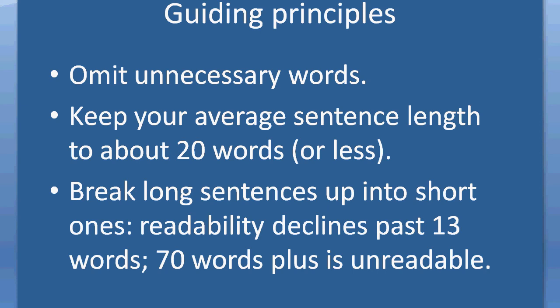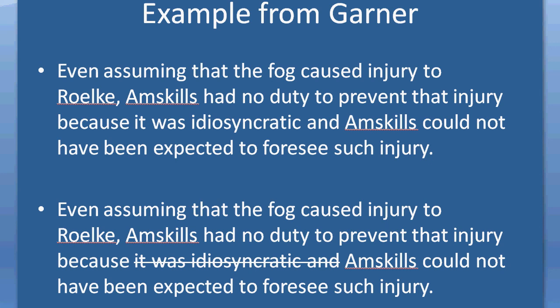Let's start applying these. We'll do a couple of examples in this screencast and then pick up a few more in screencast 3. In one of Garner's exercises he asks: can you take three or more words together out of a lengthy sentence without destroying its meaning? Here's a typical example: 'Even assuming that the fog caused injury to Rolk, AMP schools had no duty to prevent that injury because it was idiosyncratic and AMP schools could not have been expected to foresee such injury.' There's no difference in meaning if we cut out the four words 'it was idiosyncratic and,' leaving: 'Even assuming that the fog caused injury to Rolk, AMP schools had no duty to prevent that injury because AMP schools could not have been expected to foresee such injury.' It's shorter, you've saved words on your word limit, and it's clearer.